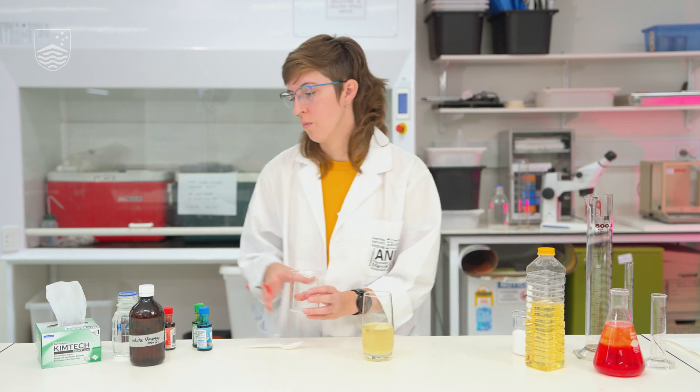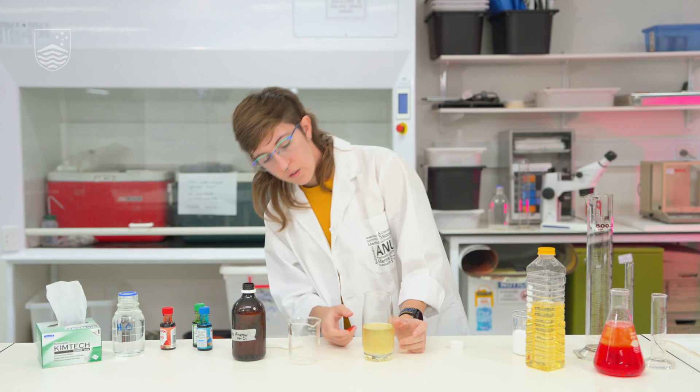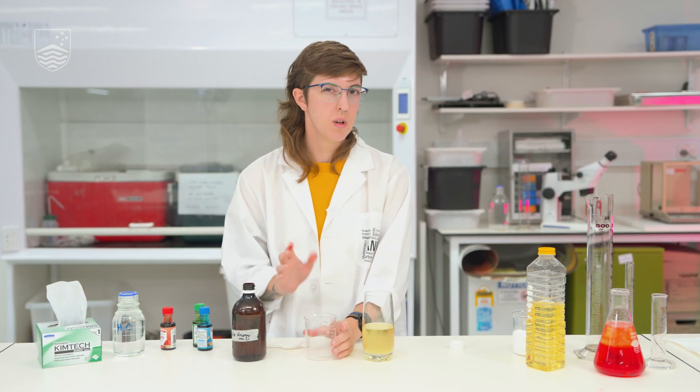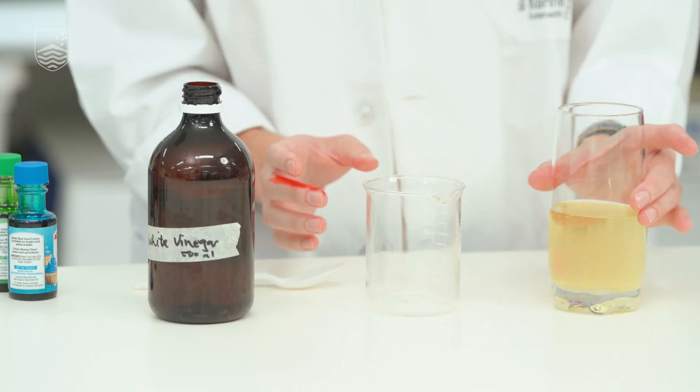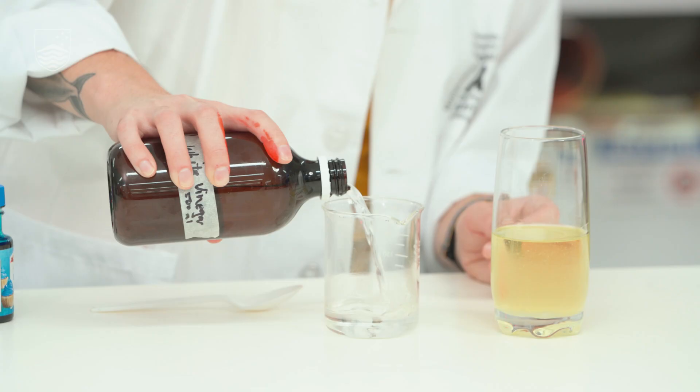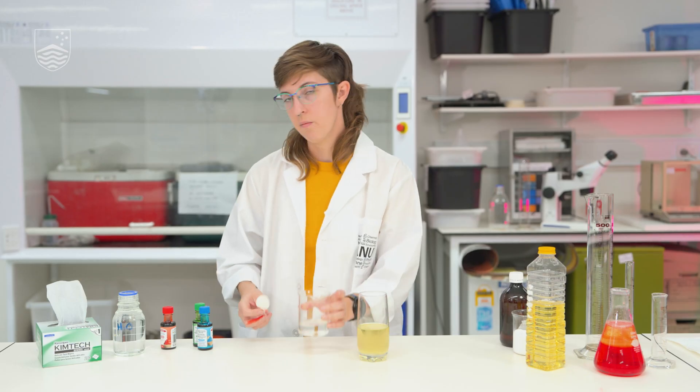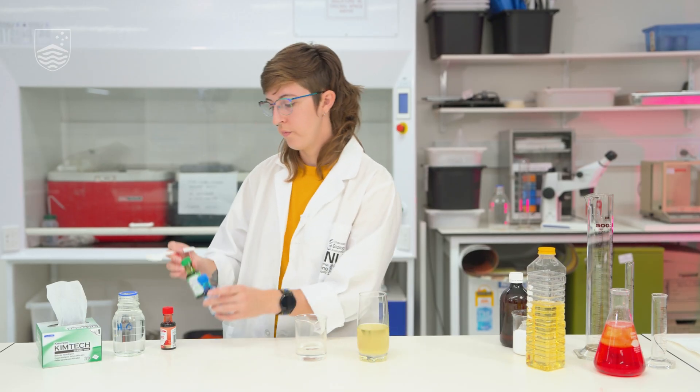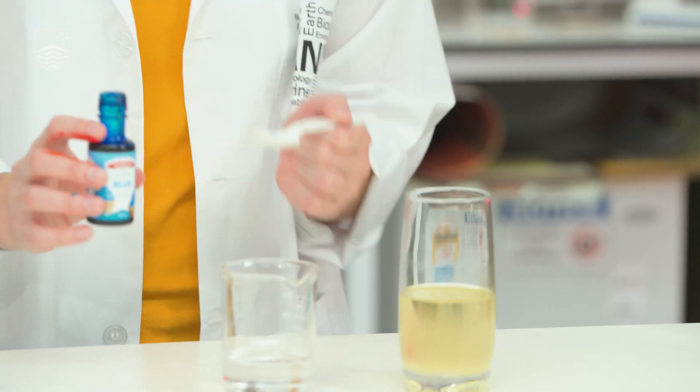In a second cup, we're going to add our vinegar. However much oil we have, we want about half of that in the vinegar, maybe a little bit more. So if you had two of the same cups, it would be about a third of one cup vinegar and half of the other cup of oil. And into our vinegar, we're going to add our food coloring. I think I'll use blue this time. And it only takes a couple of drops.